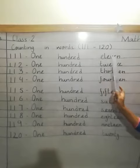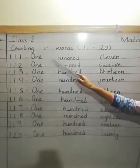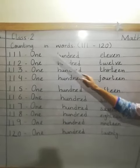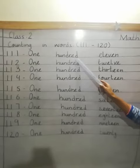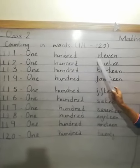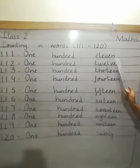111. What is the spelling of 1? O-N-E. 1. 100: H-U-N-D-R-E-D. 111: E-L-E-V-E-N.